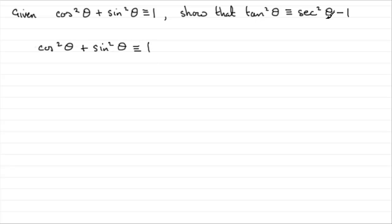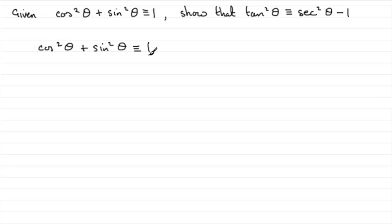So how are we going to get this? Well, I've got a few clues here because tan²θ is the same as sin²θ over cos²θ. Remember, tan θ is always sin θ over cos θ, so tan²θ will be sin²θ over cos²θ. And sec²θ is 1 over cos²θ. So it seems as if what we should do is divide through by cos²θ — divide both sides by cos²θ.